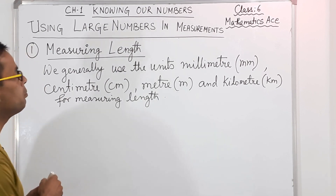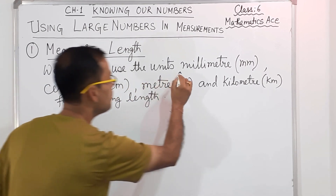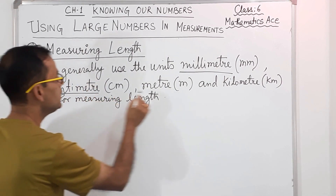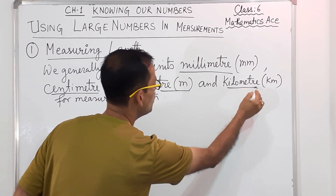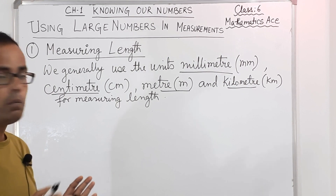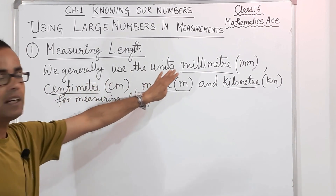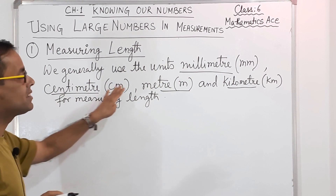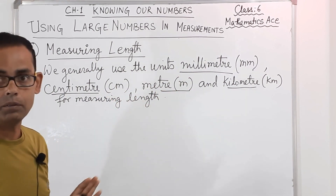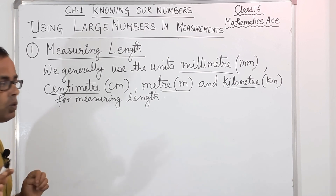For measuring length we use the units millimeter (mm), centimeter (cm), meter (m), and kilometer (km). Generally we use these. More units are there. So we use millimeter, centimeter, meter, and kilometer for measuring length.